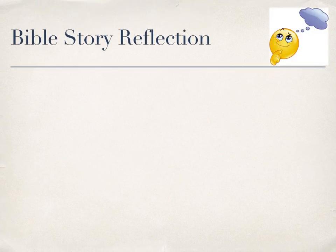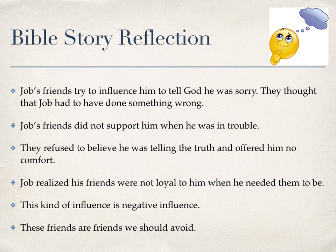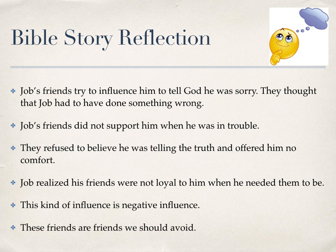Do you remember the focus questions? How do Job's friends influence him? Is the influence positive or negative? Job's friends tried to influence him to tell God he was sorry — they thought Job had to have done something wrong. Job's friends did not support him when he was in trouble; they refused to believe he was telling the truth and offered him no comfort. Job realized his friends were not loyal to him when he needed them. This kind of influence is negative. These are friends we should avoid.